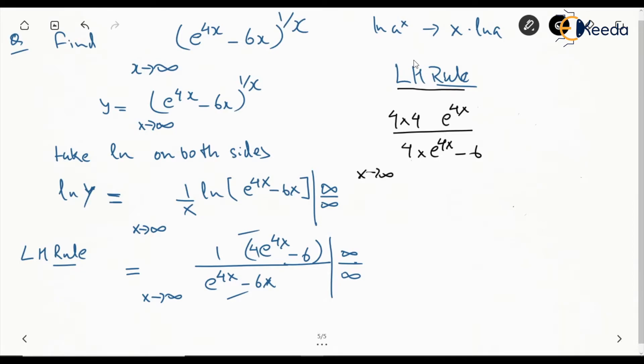So in that case, if you see this is again in the indeterminate form infinity by infinity. So either you can apply L'Hôpital's rule again or we can do it in another manner—let's take e to the power 4x common from the numerator and denominator.